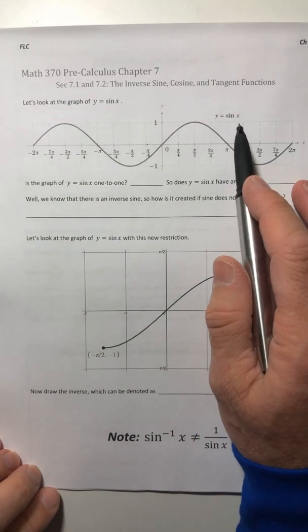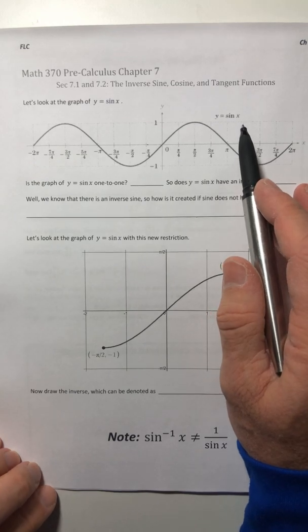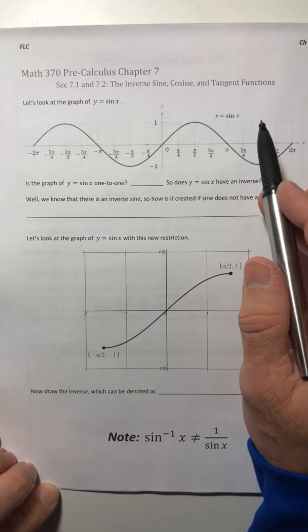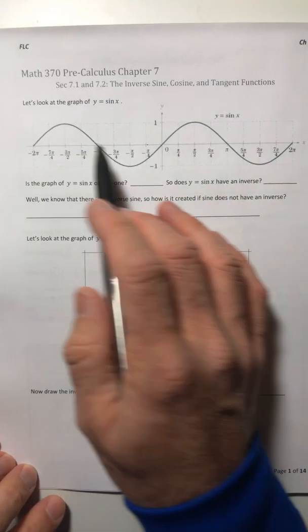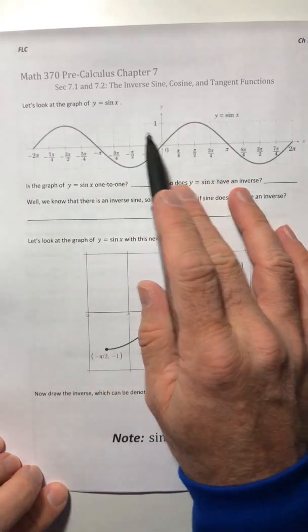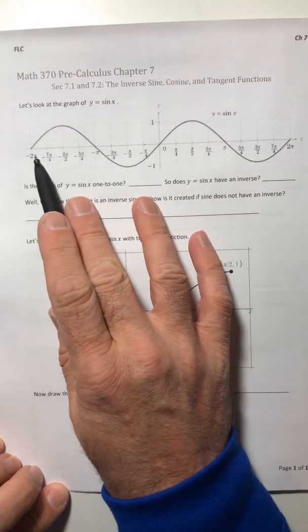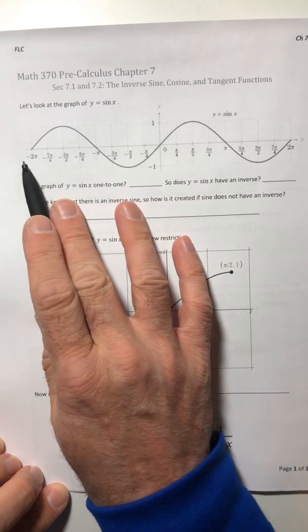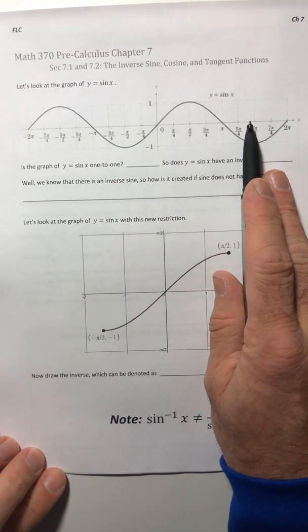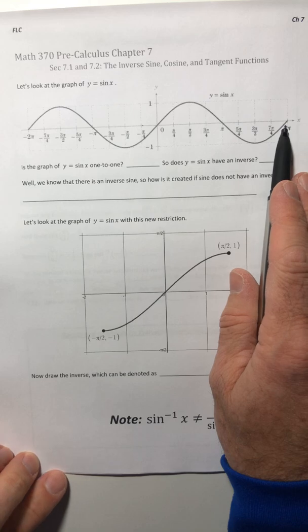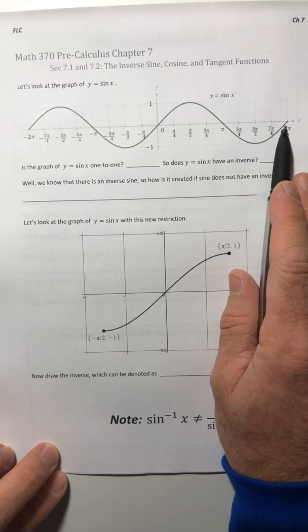Okay, so we're going to be looking at the inverse sine, cosine, and tangent functions. So let's start by looking at the graph of y equals sine of x. So we have at least a section of it from negative 2 pi to 2 pi printed out for you. So this should look really familiar. It's what we did in the last chapter.